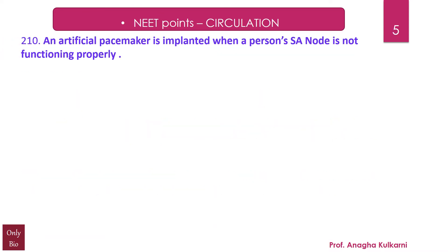Point number 210: An artificial pacemaker is implanted when a person's SA node is not functioning properly.